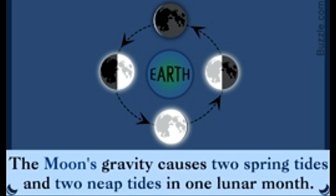The effect of lunar gravity is not felt on land, which doesn't yield easily, but water, much more fluid and flexible than solid land, responds to it in a much more noticeable fashion. The terms spring tide and neap tide refer to particular points during the lunar cycle, when the tide is the highest and the lowest, respectively.